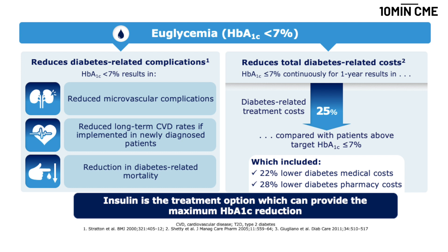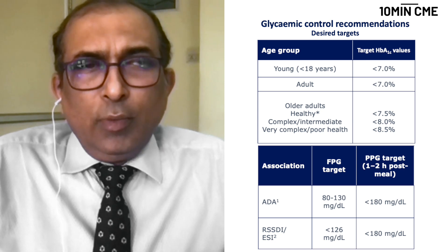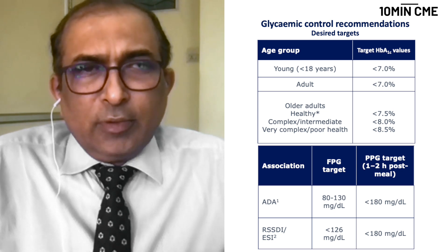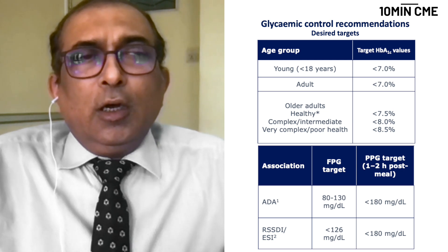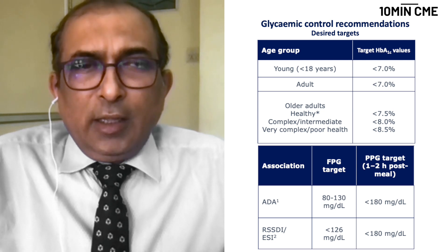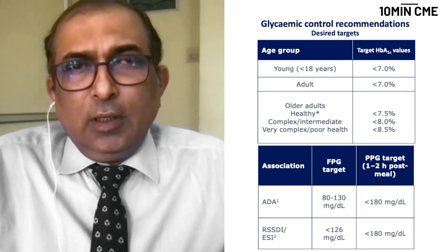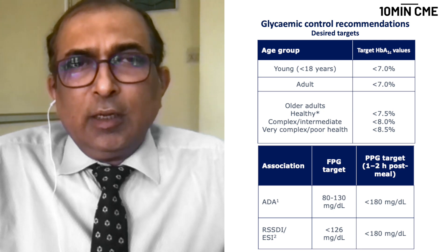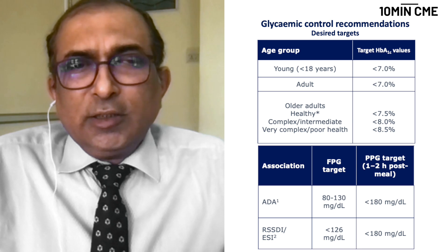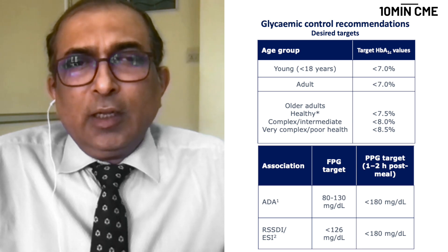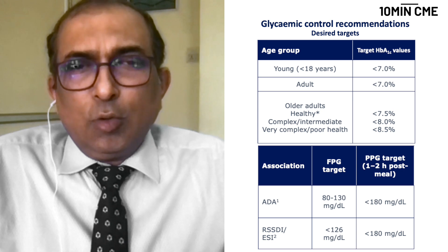When looking at desired HbA1c targets, different organizations across the globe have recommended a target HbA1c of less than 7% for most patients. Some patients with a variety of comorbidities may be allowed a higher target of less than 7.5% or less than 8%. The American Diabetes Association recommends a fasting glucose target of less than 130 and a post-prandial glucose target of less than 180, while the RSSDI and ESI consensus guideline recommends a fasting target of less than 110 and post-prandial of less than 180.